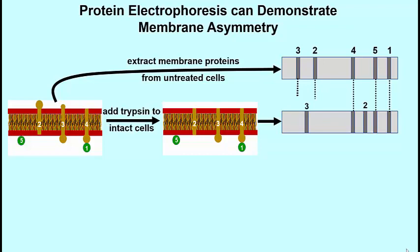And likewise, protein 2 should also move faster in the gel, and it does. So in the second gel we no longer see the original protein 3 or the original protein 2, but we do see 2 smaller proteins that have been derived from the originals by digesting intact cells.